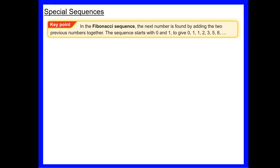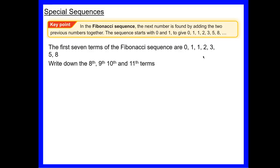Now we look at special sequences — specifically the Fibonacci sequence, named after an Italian mathematician. The Fibonacci sequence is formed by adding the two previous numbers together. Starting with 0 and 1: 0 + 1 = 1, then 1 + 1 = 2, then 1 + 2 = 3, 2 + 3 = 5, 3 + 5 = 8. Those are the first seven numbers of the Fibonacci sequence.